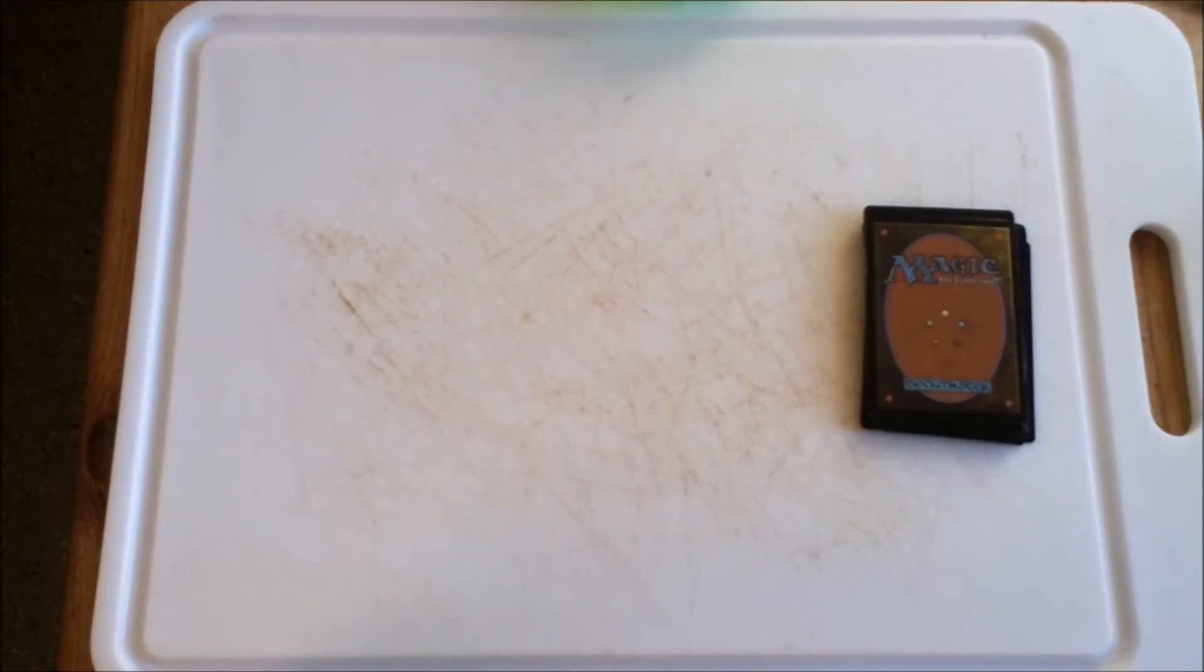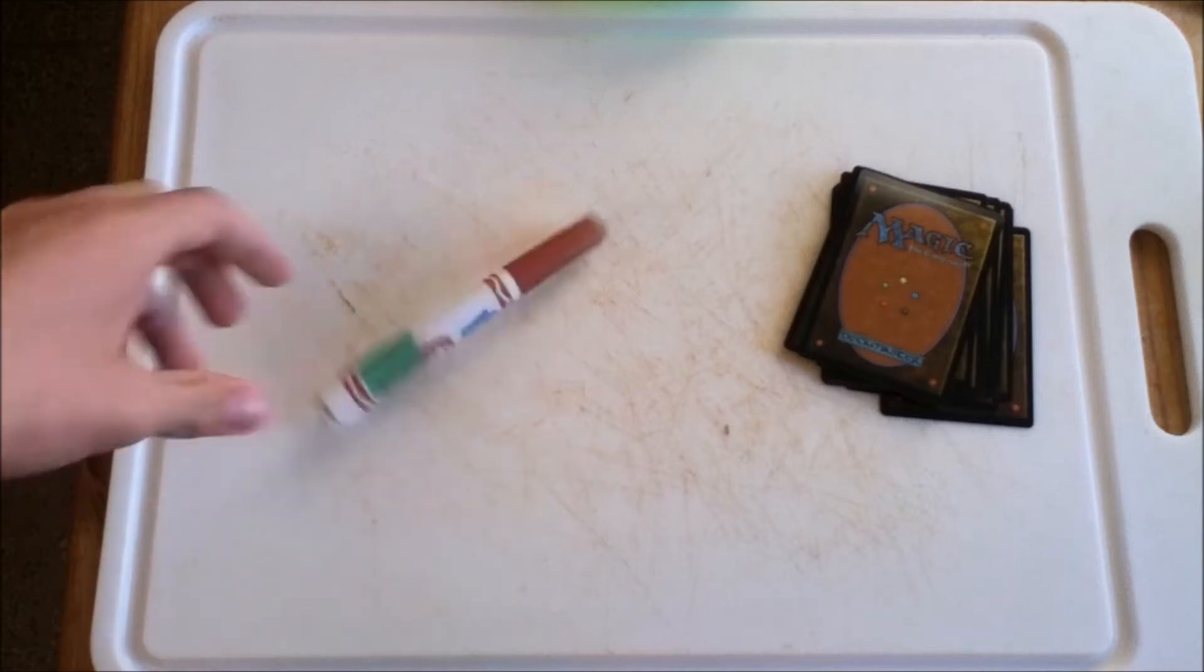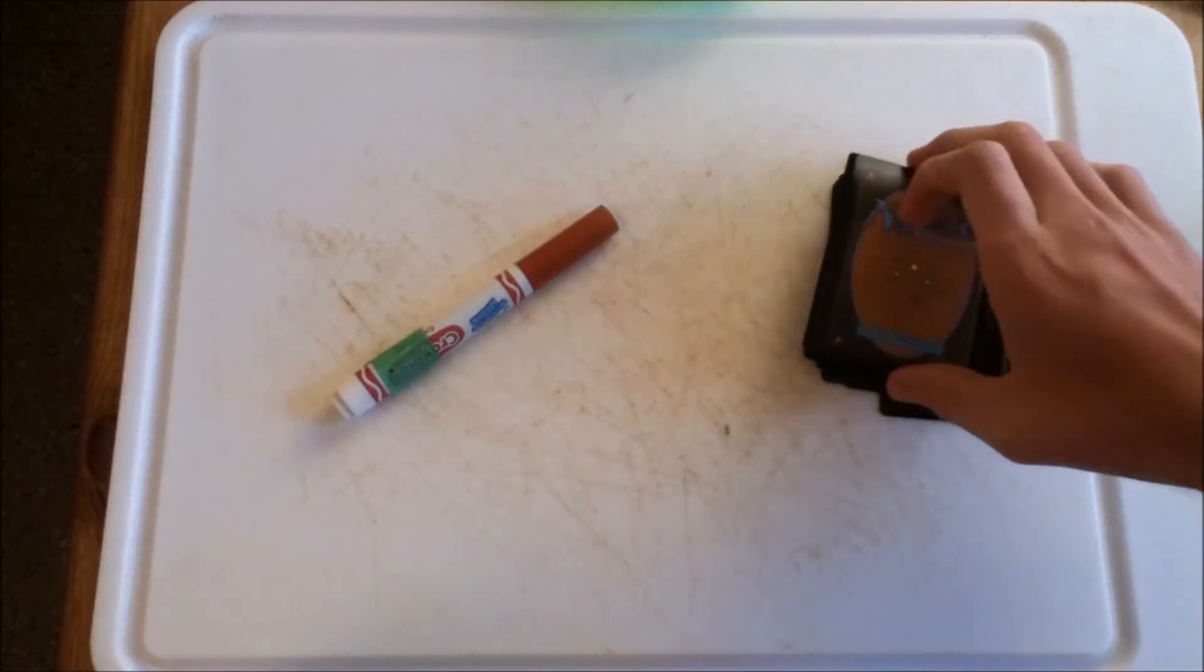Now we're going to be making pasta of the style ziti tagliati. I hope I pronounced that right. This is a very round pasta, so in order to create that, we're going to be using a marker to help create it. So let's start rolling.